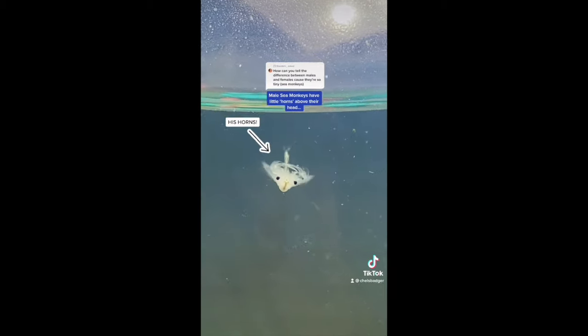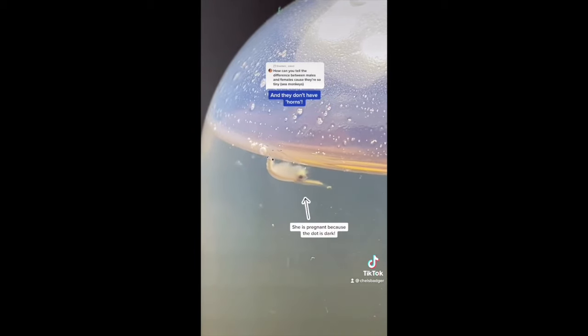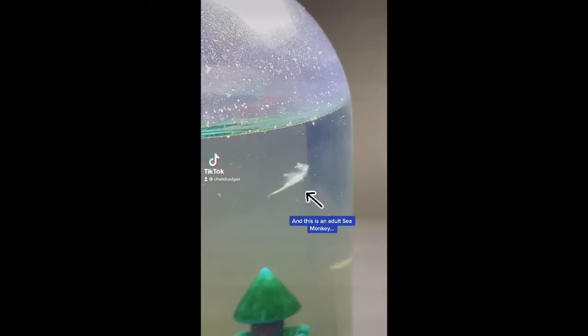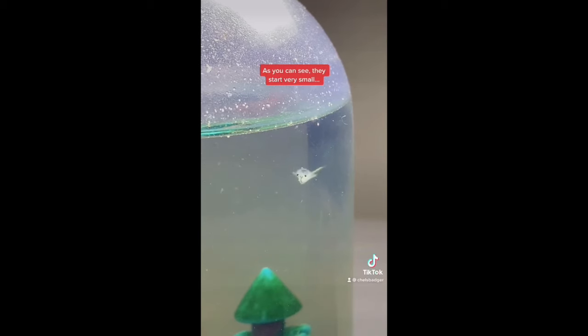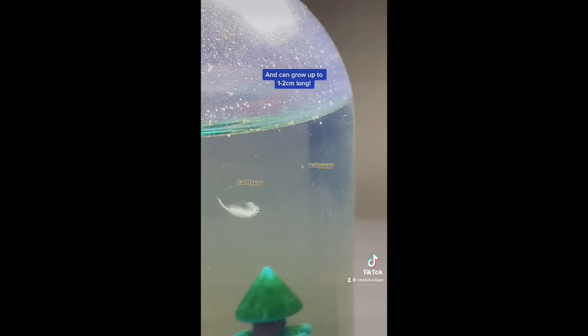Super easy to tell what gender your sea monkey is because male sea monkeys have little horns above their head and female sea monkeys have a dot on their back and they don't have any horns. This is a baby sea monkey and this is an adult sea monkey. As you can see they start very small and can grow up to one to two centimeters long.